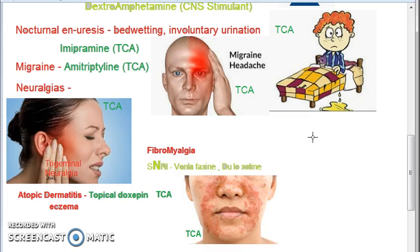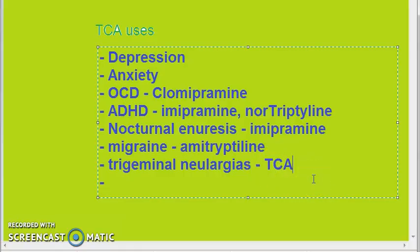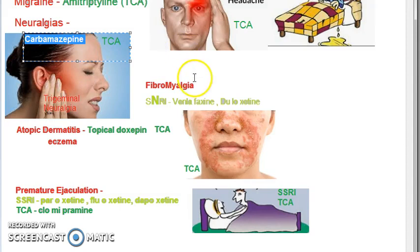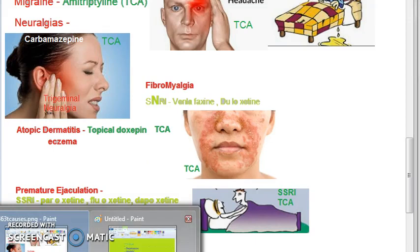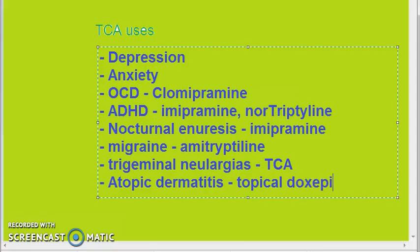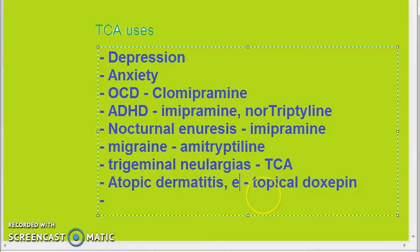For trigeminal neuralgia, also remember carbamazepine — which was learned in the context of seizures and epilepsy, and is also used for trigeminal neuralgia. However, here we are focusing on the uses of tricyclic antidepressants, which are also used for trigeminal neuralgias. For atopic dermatitis, you use topical doxepin. Note: do not confuse doxepin with the antibiotic doxycycline. Doxepin is a tricyclic antidepressant, and atopic dermatitis is also called eczema.